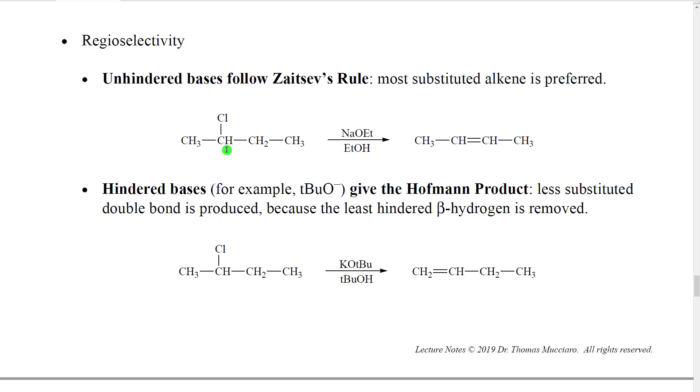Here's an example. We have this substrate with a beta carbon on this side and a beta carbon on that side. Here's our alpha carbon with our leaving group. We put in our typical sodium ethoxide ethanol reagents which are going to favor elimination. Between these two betas, the right hand beta is the more substituted, so we prefer to remove a hydrogen from that beta, push toward the alpha carbon, push out the chlorine and get this double bond right here.